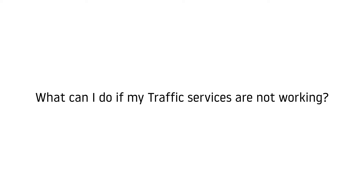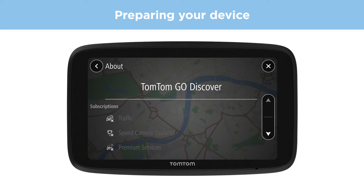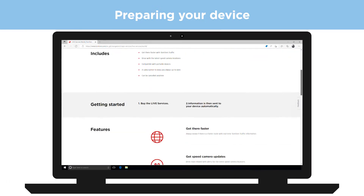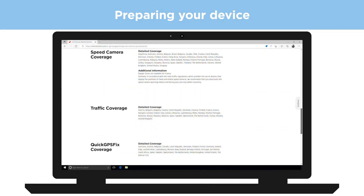What to do if your traffic or live services aren't working. If you're unable to connect to your TomTom services, first check that your device is set up properly. Check that you're in a country with TomTom services coverage. See the first link in the description for more information.